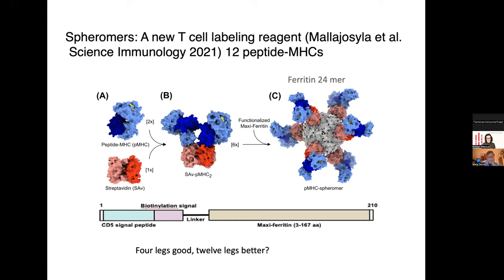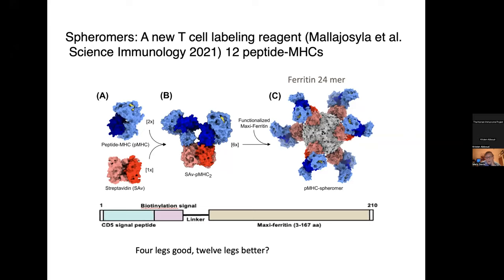Thanks for the introduction. It's a pleasure to be part of this series. I think one of the greatest limitations of advancing human immunology has been the paucity of technologies that can give us precise information about immune system function. Some years ago, we developed the peptide MHC tetramers, which have been a way to label T-cells according to their peptide MHC specificity.